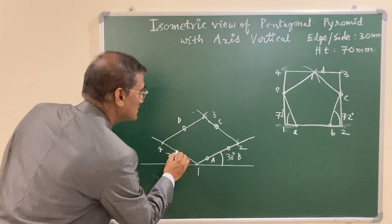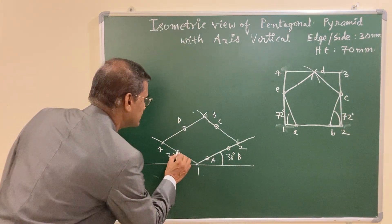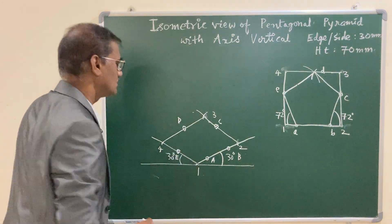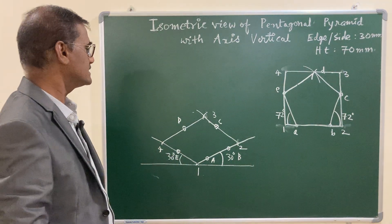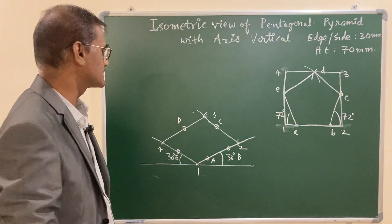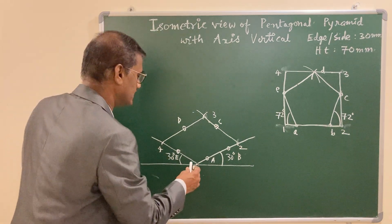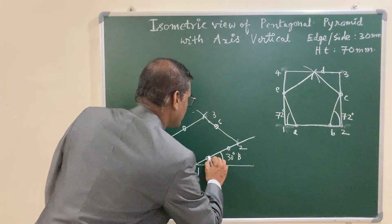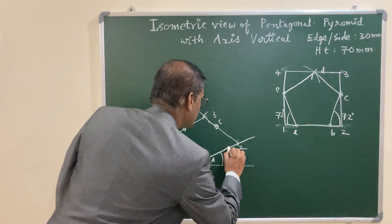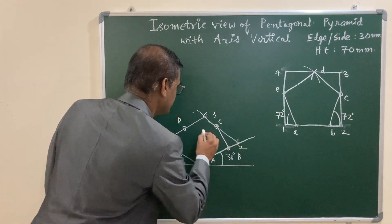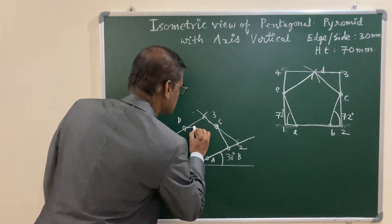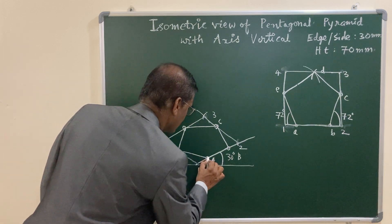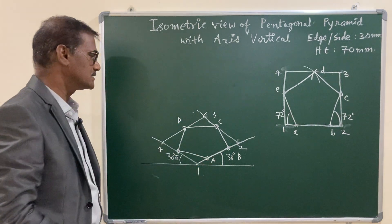Finally, locate point E. You have now located all the points A, B, C, D, and E. With a 2H pencil, join them in proper sequence: A-B, B-C, C-D, D-E, and E-A. This is the base of the pyramid.